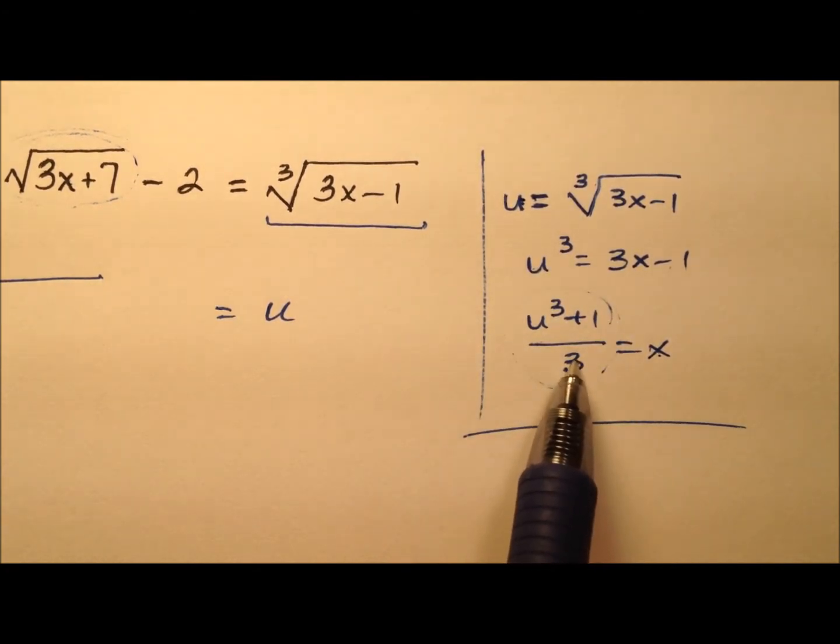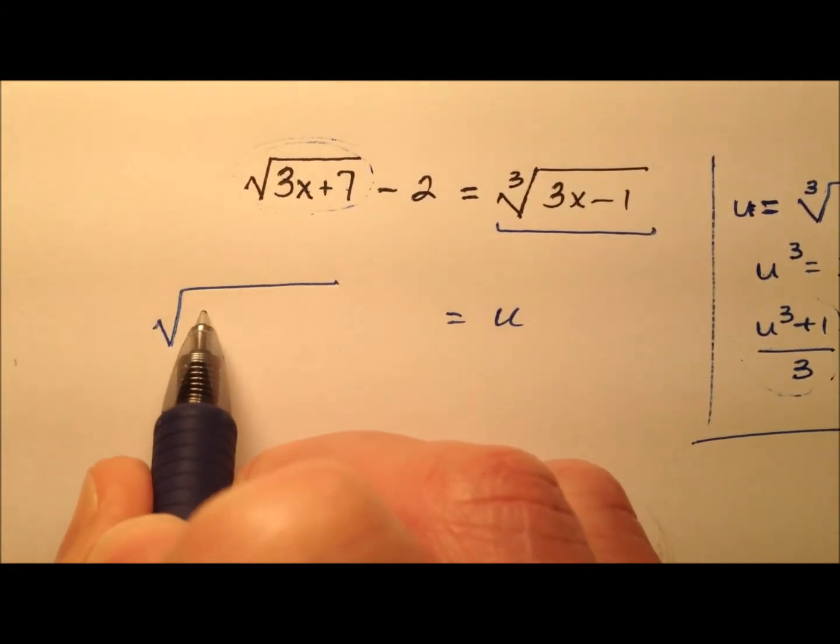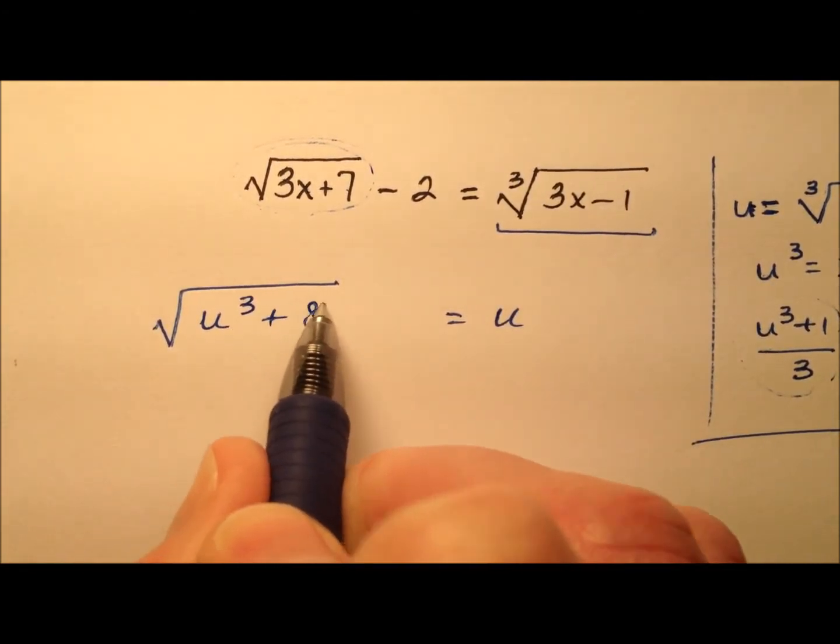Well, 3 times that, that's nice because those 3s will cancel, so it's just going to be u cubed plus 1, and then plus 7, so we could just say u cubed plus 8.